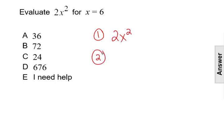The second step is to substitute in the value of the variable using parentheses. So our value here is 6 for x. Instead of 2x squared, we're going to write 2 in parentheses 6 squared.